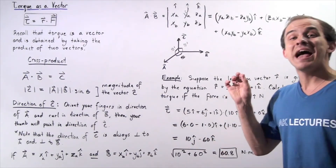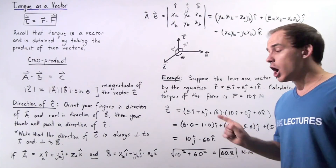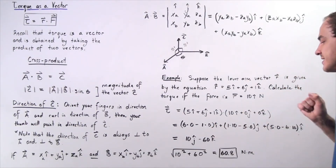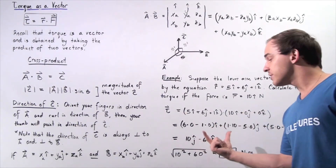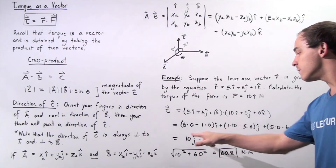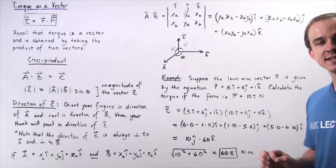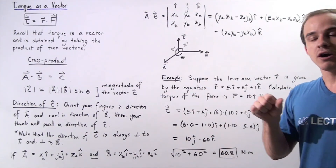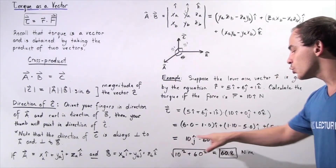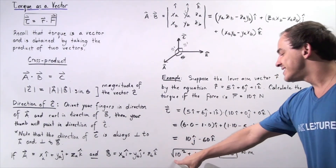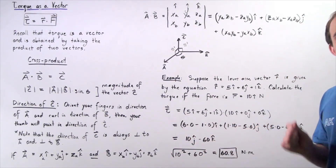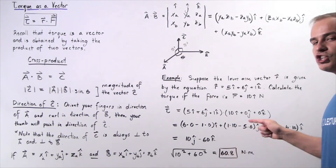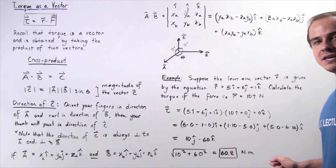To find the magnitude of this torque vector, we take the square root of the sum of the squares of the component quantities. The square root of 10 squared plus 60 squared gives us approximately 60.8 Newton-meters. This is the magnitude of the torque vector.